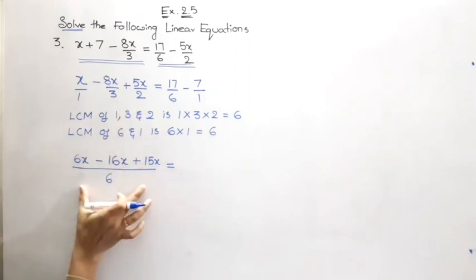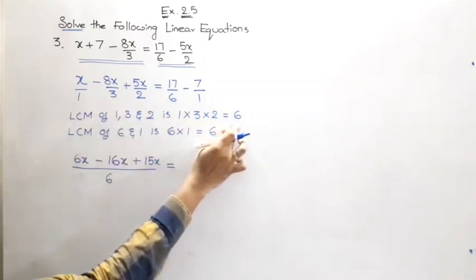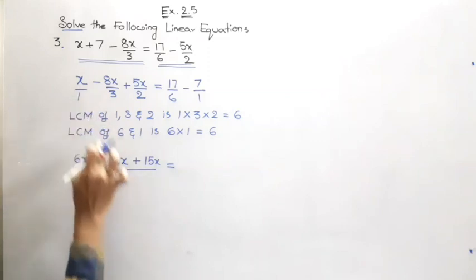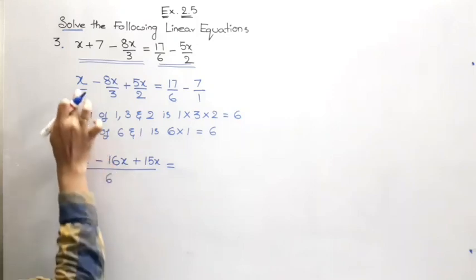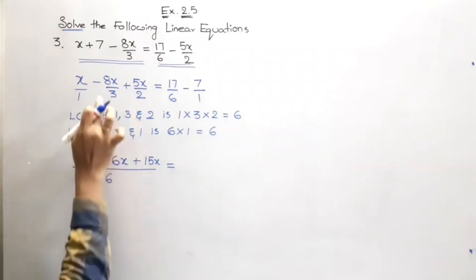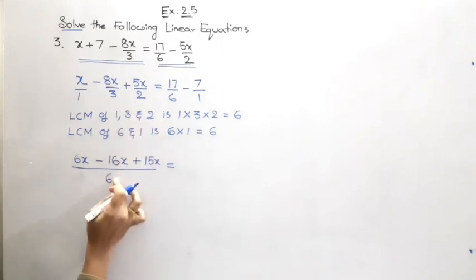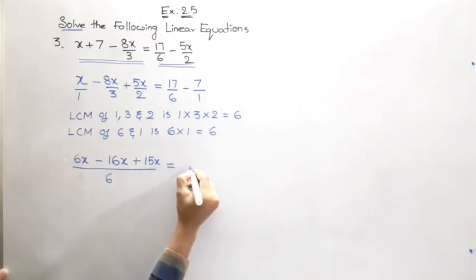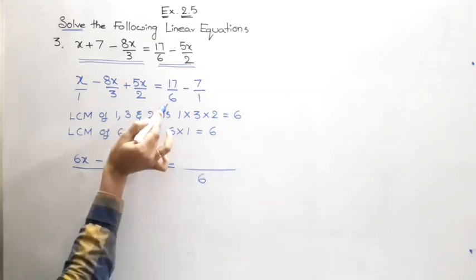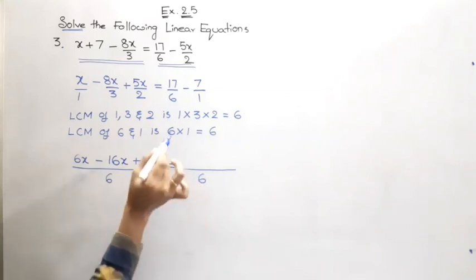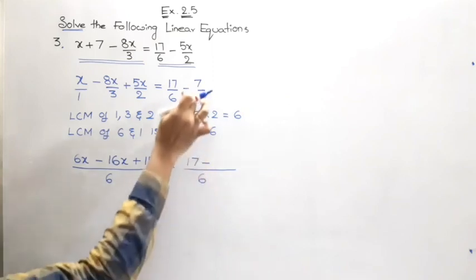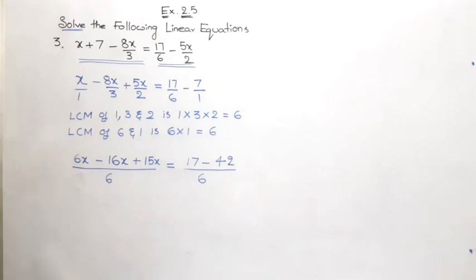I am just repeating this step for better understanding. Look, for the denominators 1, 3 and 2 we got the LCM 6. So we took the common denominator as 6. Now comparing this denominator and this denominator, 1 how many times is 6? 6 times. So that 6 into the original numerator, 6x. Minus 3 how many times is 6? 2 times. 2 into 8, 16x. Next, 2 how many times is 6? 3 times, 3 into 5 is 15x. Is equal to—again for both 6 and 1 we got the LCM as 6. Now 6 into the denominator 6, how many times is 6? 1 time. So 17 into 1 gives 17. Minus 1 how many times is 6? 6 times. 6 into 7 is 42.